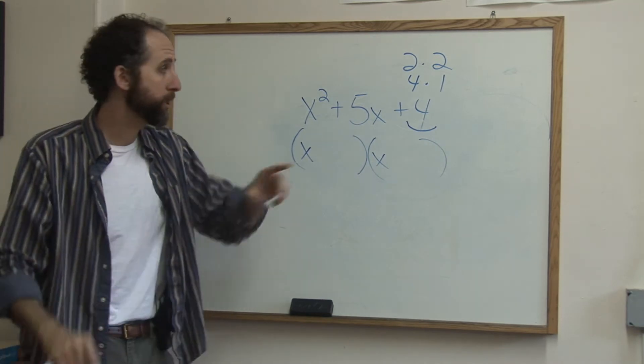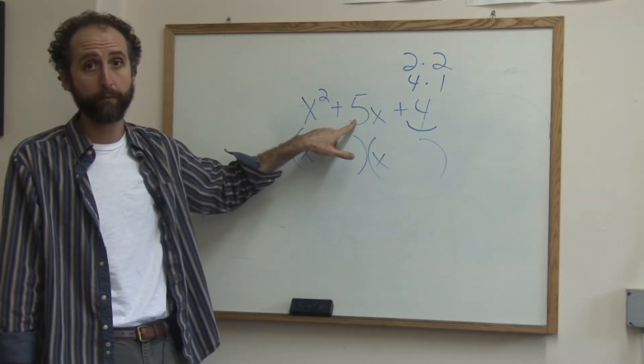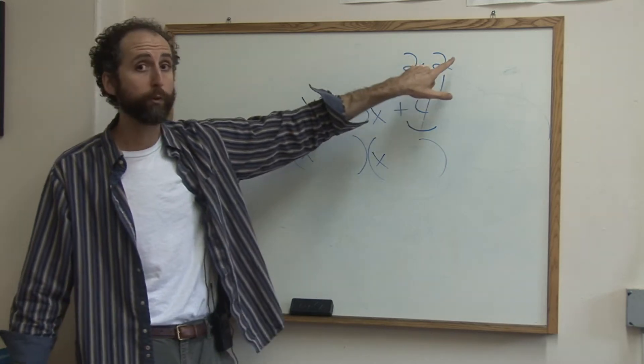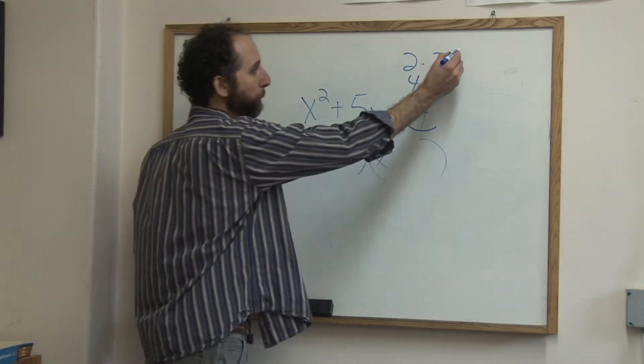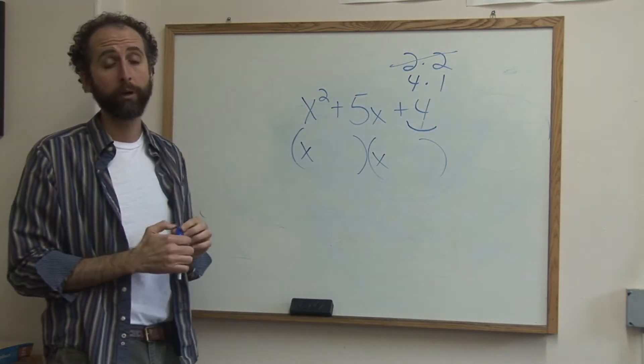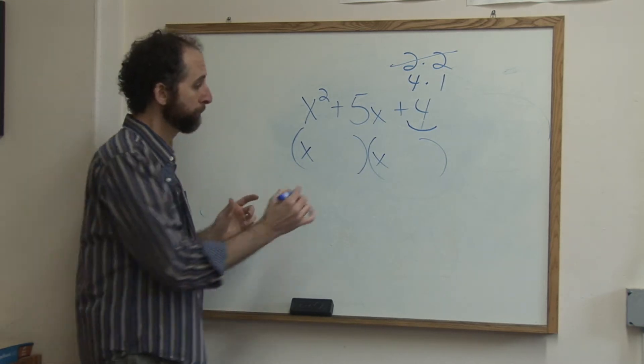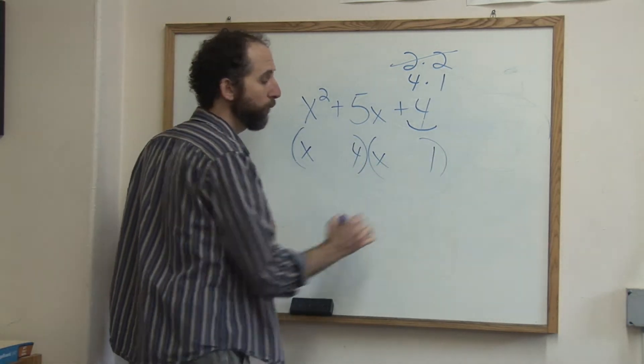Now you ask yourself which of those two can combine to give me 5. There's nothing you can do with 2 and 2 to get 5, right? So that's out. 4 and 1 work. 4 plus 1 is 5. So you're going to put a 4 here and a 1 here.